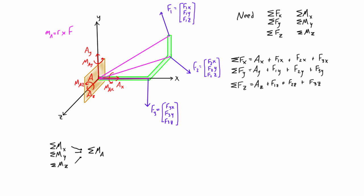Adding those lengths together lets you find the position vectors from A. The reason it might be beneficial to use the origin instead is that if we have coordinates, we can use those coordinates directly as position vectors from the origin. The three position vectors here are R1, R2, and R3. When we find the sum of moments about point A in 3D, it will have the X, Y, and Z components all built into it.